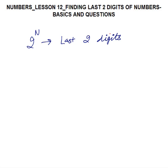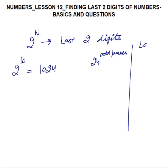Now we will discuss how to find the last two digits of numbers such as 2 raised to the power N. The concept we use is that 2 raised to power 10 is 1024. Any odd power of 24 — for example 24 power 3, 24 power 7, 24 power 157 — the last two digits will always be 24.